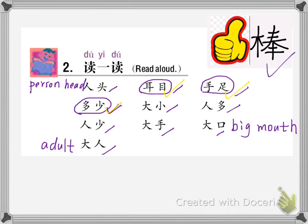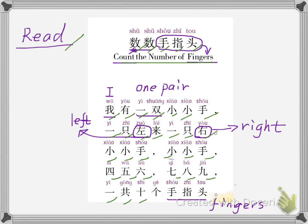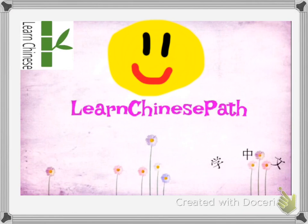You are awesome! 棒! Let's read again. Count the number of fingers: I have one pair of little little hands, one is left and one is right. Little little hands, little little hands. Four, five, six, seven, eight, nine. All together I have ten little fingers. Hope you like this video, and please subscribe and continue to support us. Bye!